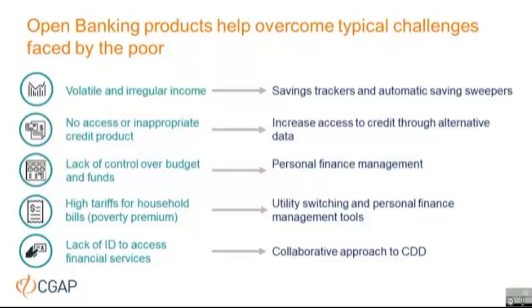Another issue for poor people is the poverty premium — they pay higher tariffs for household goods than middle or upper class individuals. Utility switching applications and personal finance management tools can help by going through a person's budget, highlighting where they're overpaying for utilities, and facilitating a switch to a better-priced provider in a seamless fashion — ending the initial subscription and gaining access to a new, cheaper tariff. Examples include Trim in the US and Plum in the UK.